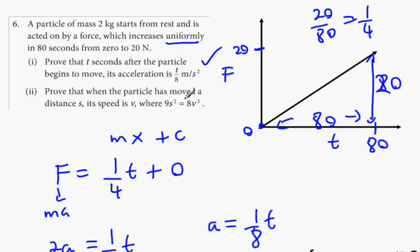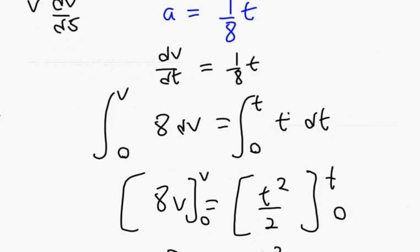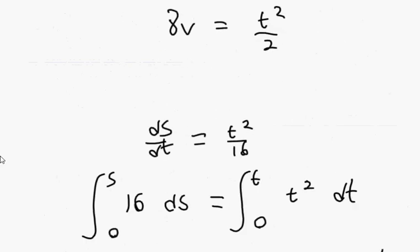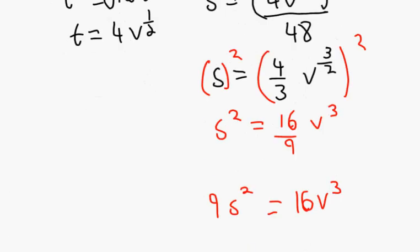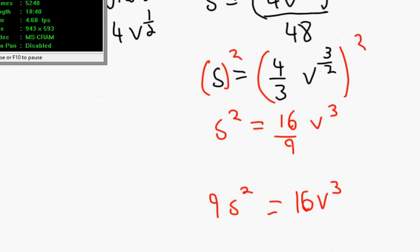It should be 8, but it's a misprint — it should actually be 16. The answer is 9S² equals 16V³, and that's your answer to that one.